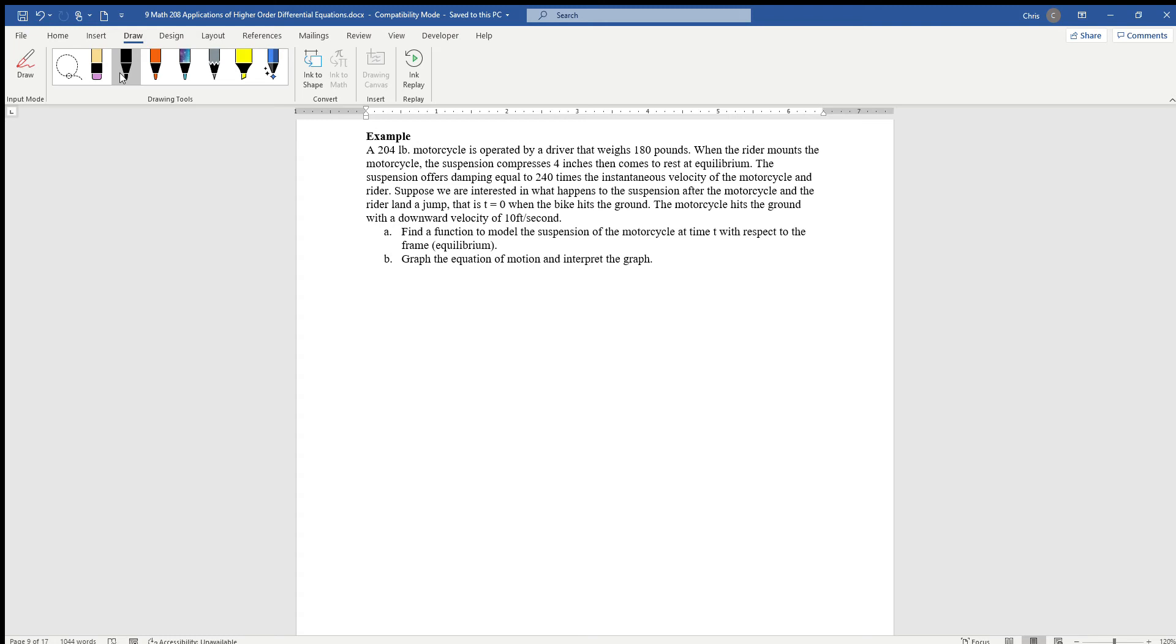When the rider mounts the motorcycle, the suspension compresses four inches and then comes to rest at equilibrium. The suspension offers damping equal to 240 times the instantaneous velocity. We're interested in the equation of motion of the suspension after the motorcycle lands a jump. Let's assume that t equals zero is when the bike hits the ground, and we're going to model the suspension with respect to the frame, which is the point of equilibrium, and then graph the equation and interpret the equation of motion.